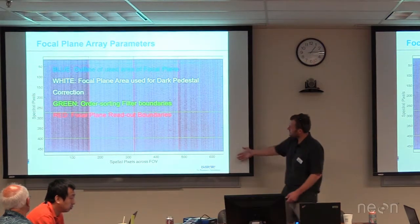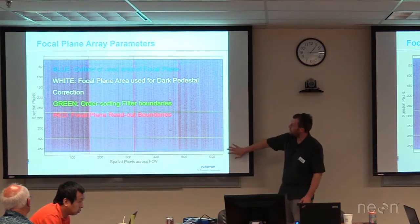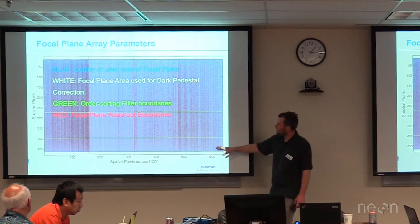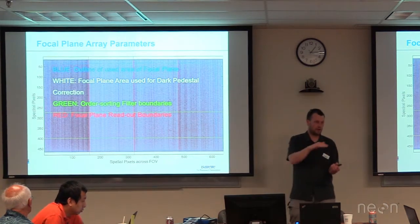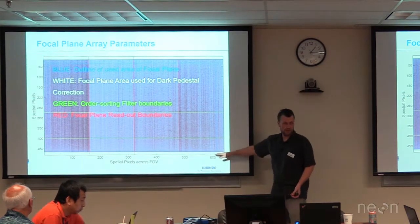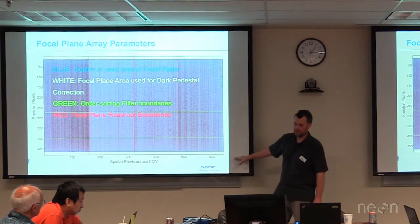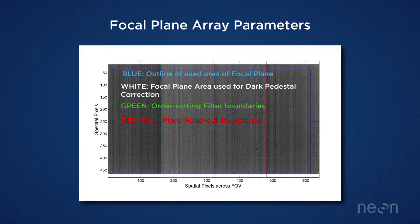On to characterizing our focal plane. The detector is 480 pixels in the spectral dimension and 640 pixels in the spatial dimension. Of that whole detector, we only use the area inside the blue region for science data — about 425 by 598–600 pixels in the spatial dimension. The area outside of that we use for calibration. The green lines here are the order sorting filter boundaries, which reject other orders of light that are inside the spectrometer.